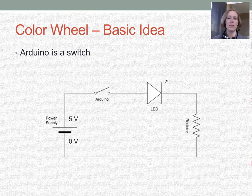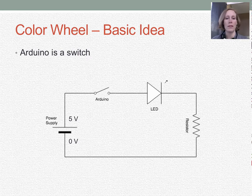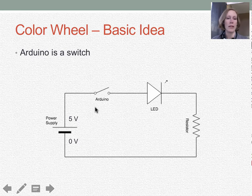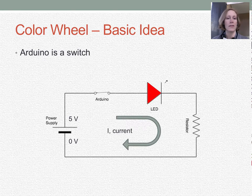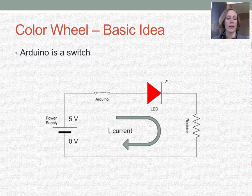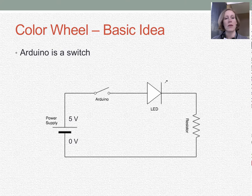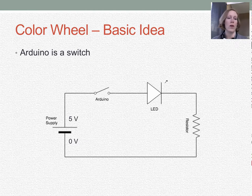Before we get into the specifics of the project, we need to understand the basic idea of what's happening with this color wheel. We can think of the Arduino as a switch. All it does for us is open and close the circuit so that when the Arduino is allowing current to flow and it's connected, we have current flowing through the system. That means the switch is closed and we can turn an LED on. If we open the switch, we turn our LED off.